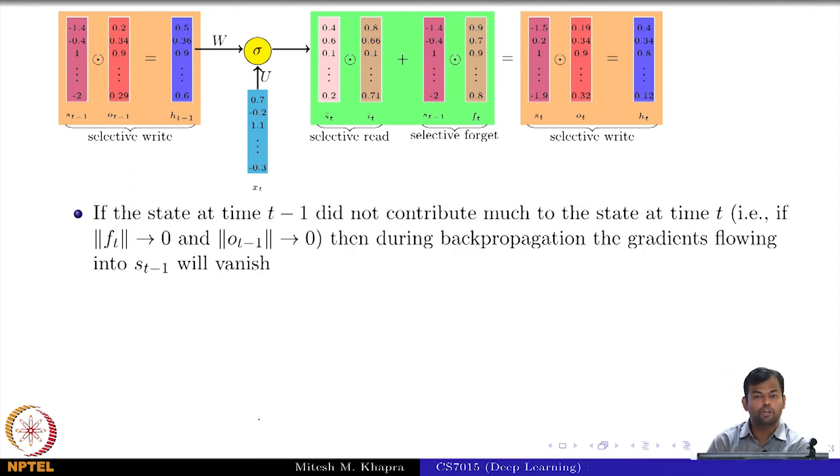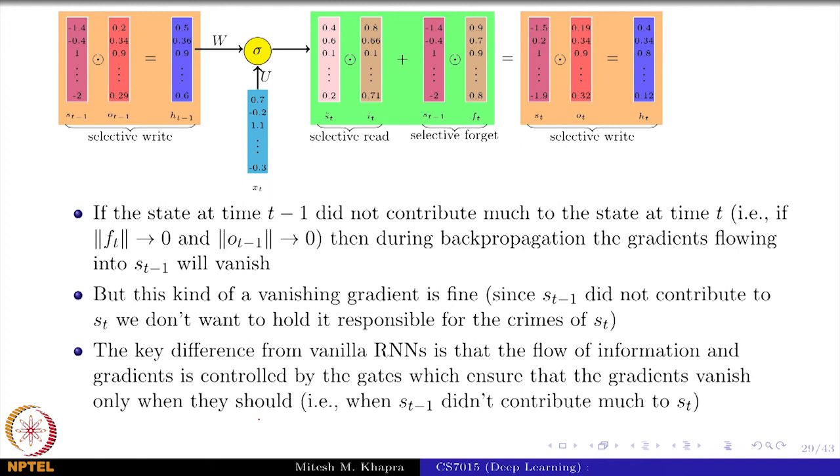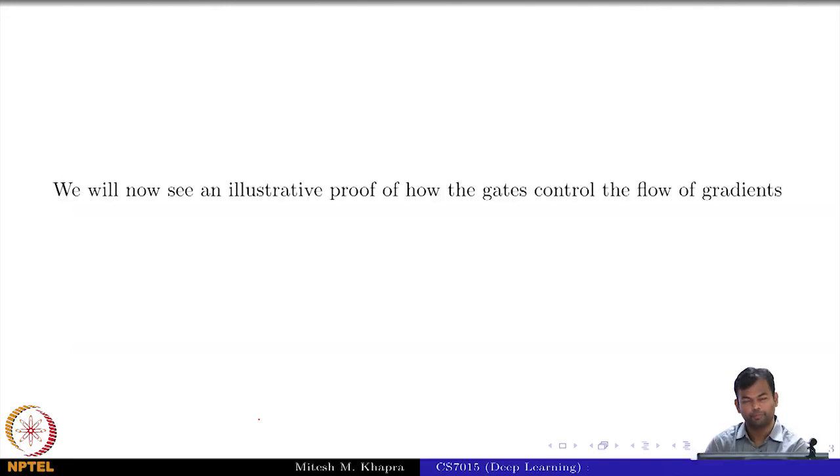If the state at time T minus 1 did not contribute much to the state at time T because F_T was tending to 0, then during back propagation the gradients flowing into ST minus 1 will also vanish, because again during back propagation the gradients will get multiplied by F_T and they will vanish. But this kind of vanishing gradient is fine. This is fair because if you did not contribute in the forward direction, why should I hold you responsible in the backward direction. The key difference from RNNs is that the flow of gradients is now controlled by gates which do the same regulation in the forward pass as well as the backward pass. Only if you contributed to something, you will be held responsible. If your contribution vanished, your responsibility in the backward pass will also vanish.